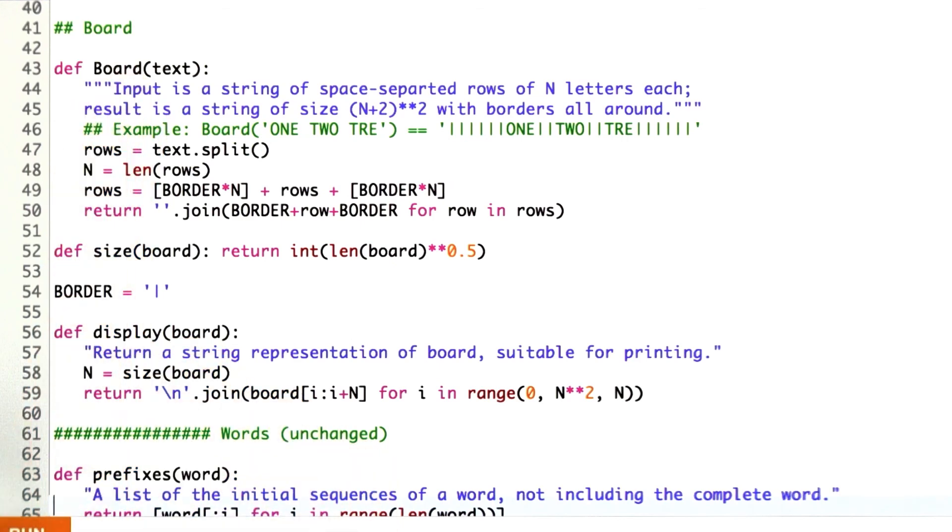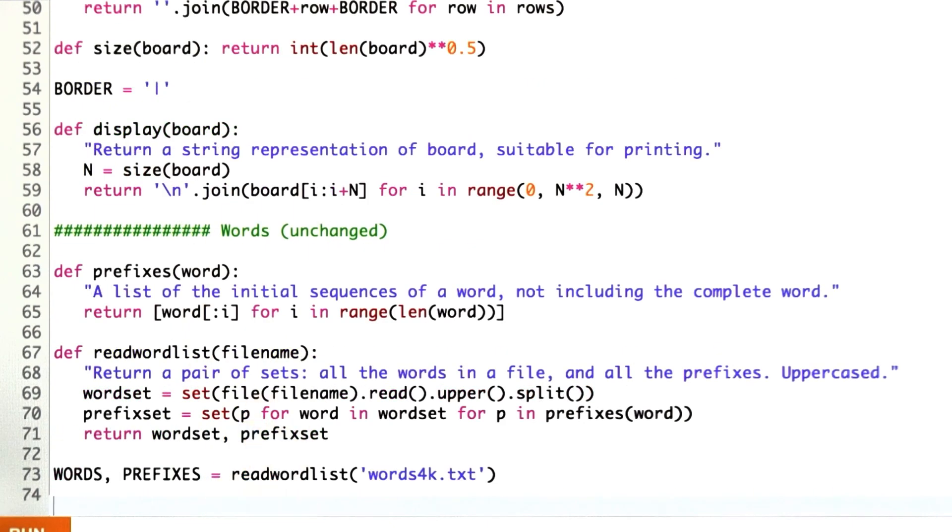Here's our representation of board using the single string representation that I talked about. Here's a simple function to display that. It doesn't actually print it, but it returns a string, which is easily printable. And then this part, the words and prefixes you might find very useful. That's unchanged from before.